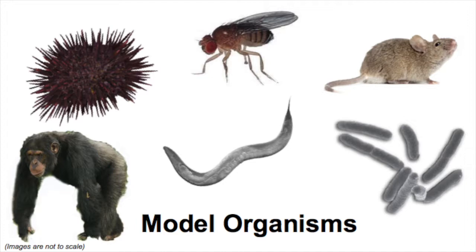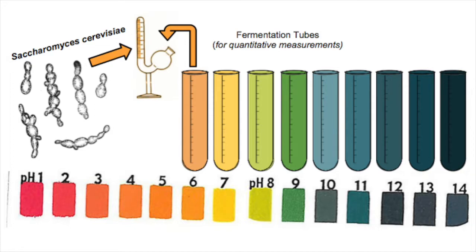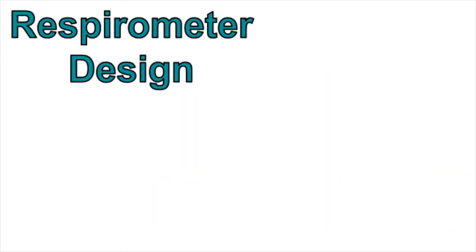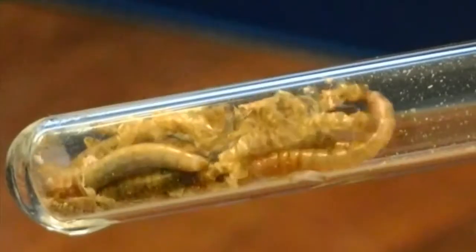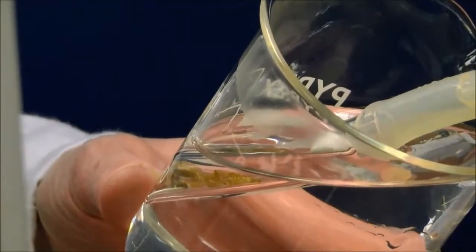Experimentation on cell respiration may involve a variety of organisms. In class, we will focus on yeast respiration using fermentation tubes. These experiments could also involve invertebrate or plant specimens in respirometers. When using these models, they are removed from their natural environment and placed in a controlled environment.